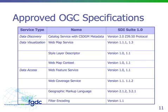In terms of data access standards, the Web Feature Service provides access to vector feature data. The Coverage Service provides access to continuous coverage data such as imagery and elevation. Geography Markup Language is an XML dialect that allows for the encoding of vector information. Filter encoding is used by other specs such as WFS and catalog to support a query syntax — it allows you to filter results, for example, to see only features of a certain type within a given bounding box.